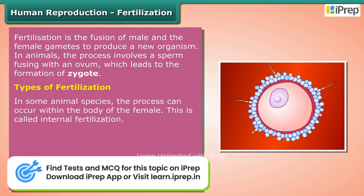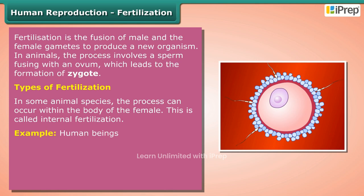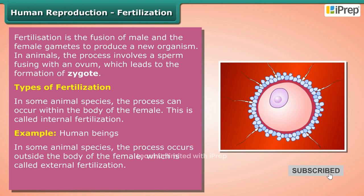There are two types of fertilization. In some animal species, the process can occur within the body of the female — this is called internal fertilization, for example in human beings. In some animal species, the process occurs outside the body of the female, which is called external fertilization.